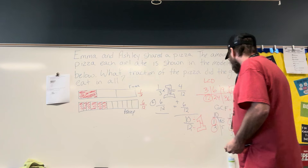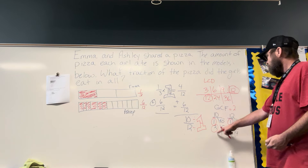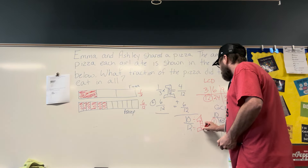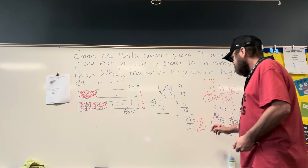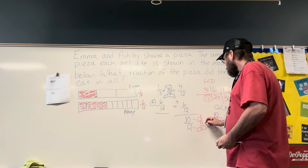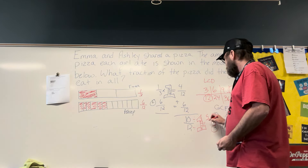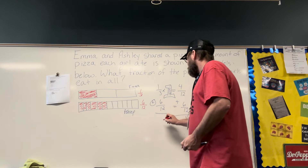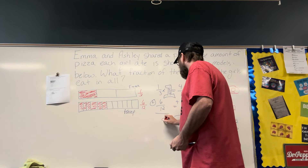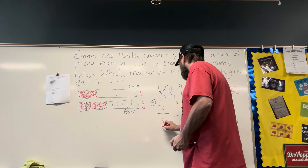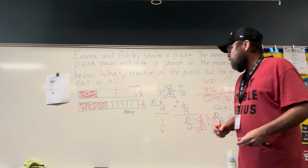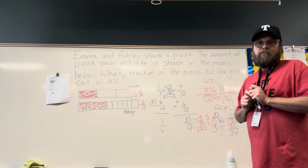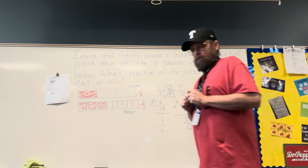I'm dividing by 2 because that is the greatest common factor. 2 over 2 does equal 1. 10 divided by 2 is 5, and 12 divided by 2 is 6. So my answer is 5-sixths. 1-third plus 6-twelfths is 5-sixths. Thank you.